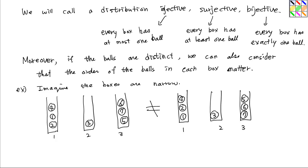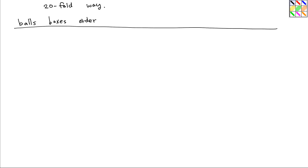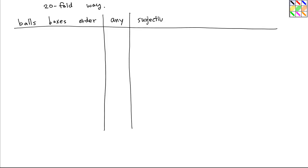In summary, let me make a table. This is called the 20-fold way. The situations are described by: balls (distinct or identical), boxes (distinct or identical), and order (matters or doesn't). There are also four types of distribution: any function, surjective, injective, and bijective.